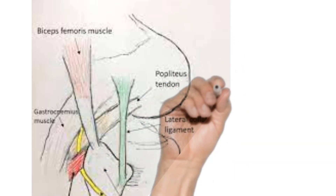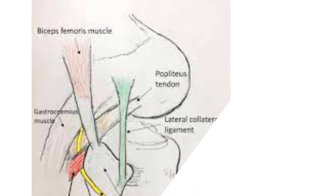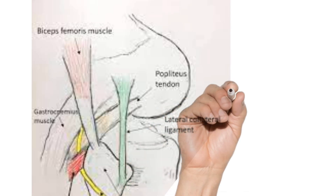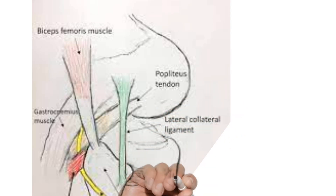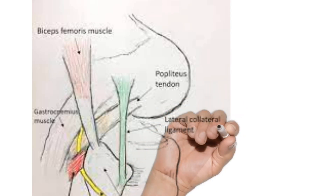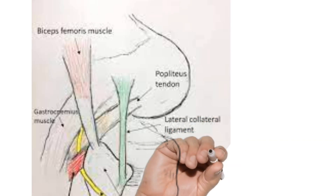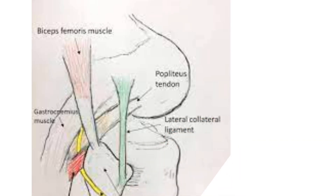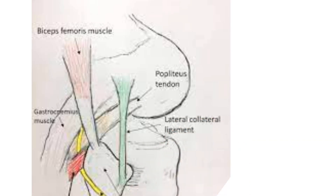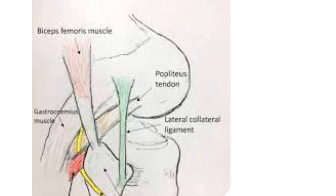Regarding the popliteus tendon, the muscle belly attaches to the back of the tibia, runs through the popliteal hiatus behind the lateral meniscus, and inserts at the lateral femoral condyle on the popliteus sulcus. It is intra-articular and lies deep to the lateral collateral ligament.